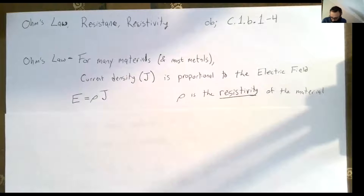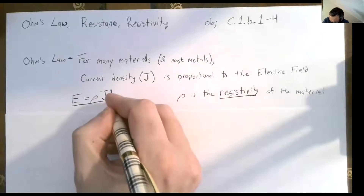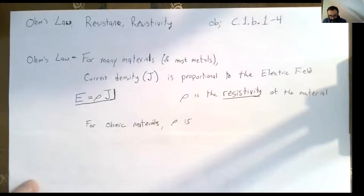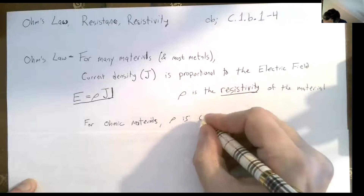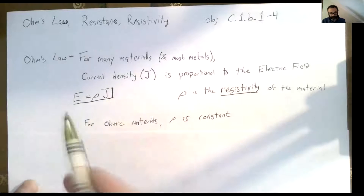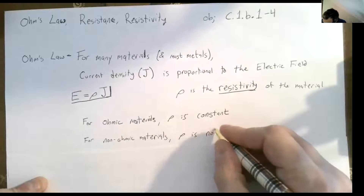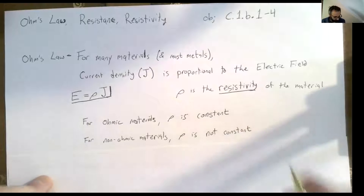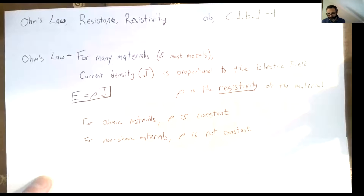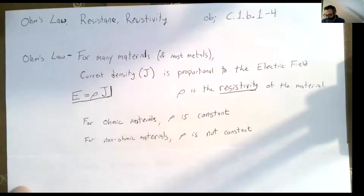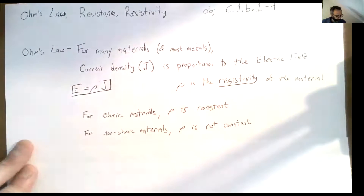This is Ohm's law — the electric field is proportional to current density. Any material that follows Ohm's law we call ohmic. For ohmic materials, this resistivity is constant, which means E and J are really proportional to each other. For non-ohmic materials, the resistivity is not constant — it could change for different amounts of potential difference. For ohmic materials we have a constant resistivity; for non-ohmic materials the electric field and current density are not proportional because the resistivity depends on the potential or the current.